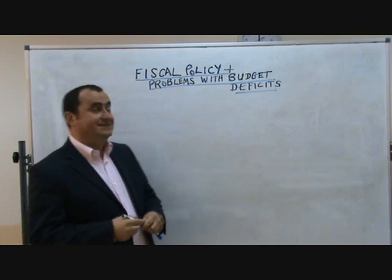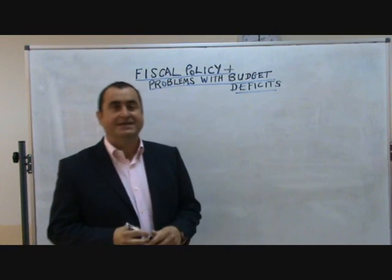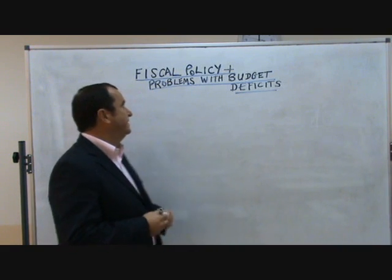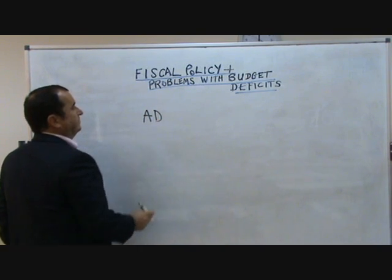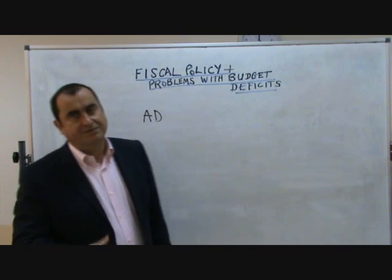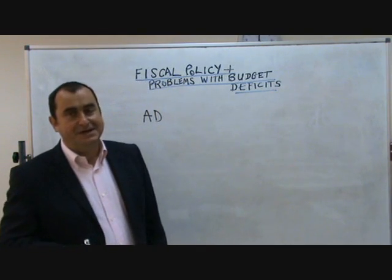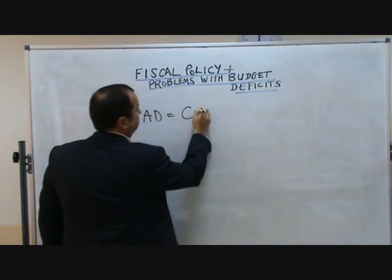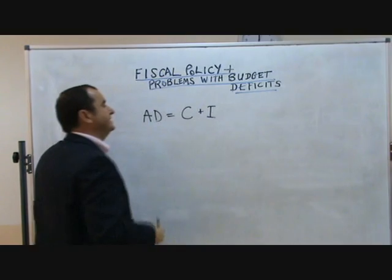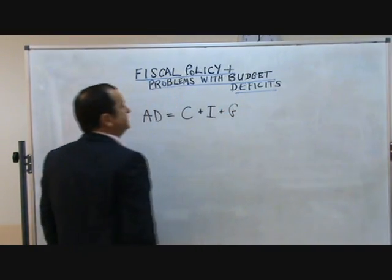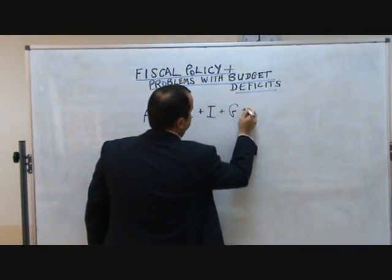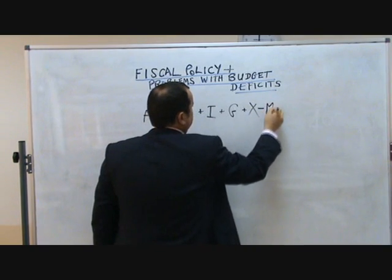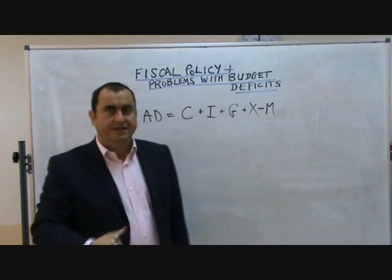Fiscal policy is about manipulating government spending and taxation levels in order to manage the level of aggregate demand. Aggregate demand in an economy — which is all the spending in the economy at a given price level and in a given time period — is made up of consumer spending (consumption), plus firm spending (investment), plus government spending (G), plus the spending of foreigners in our economy (exports), minus what we spend on foreign goods (import spending).